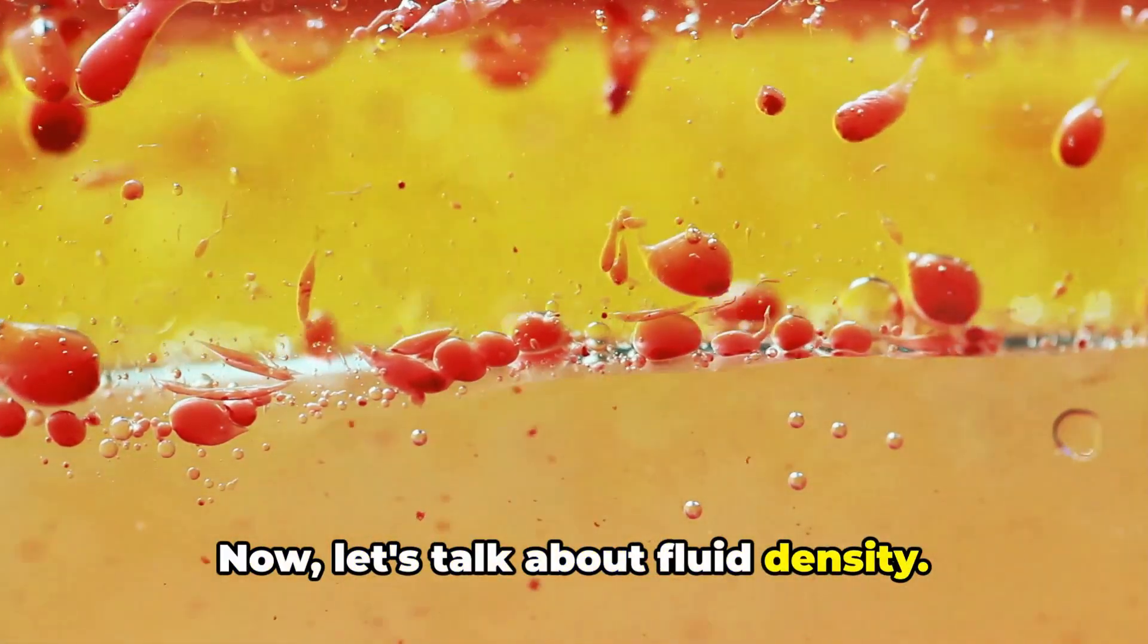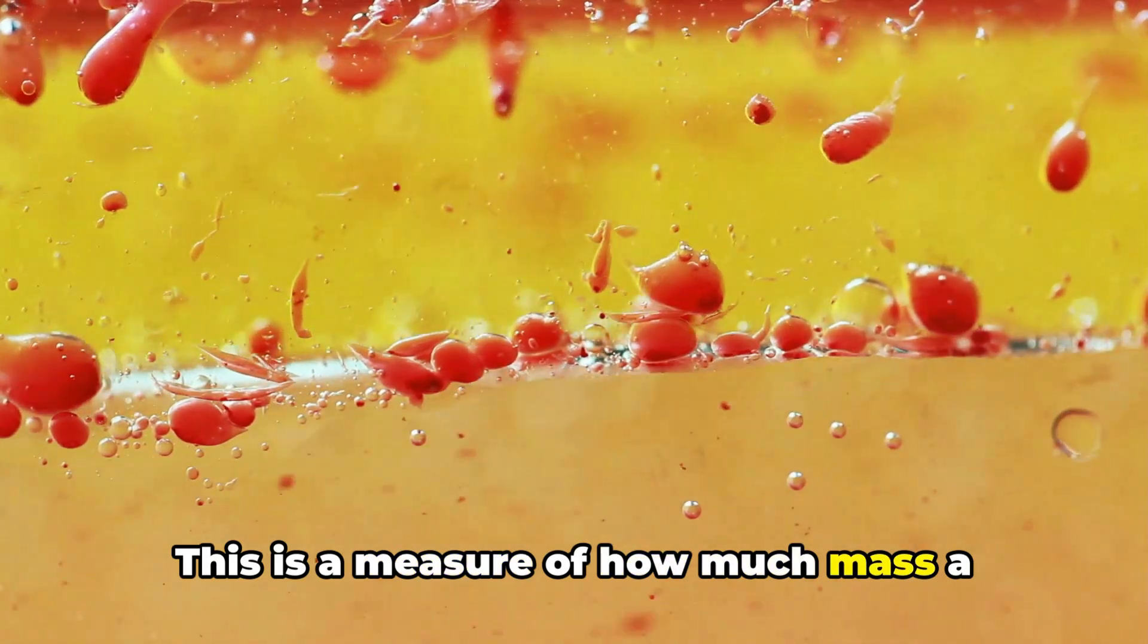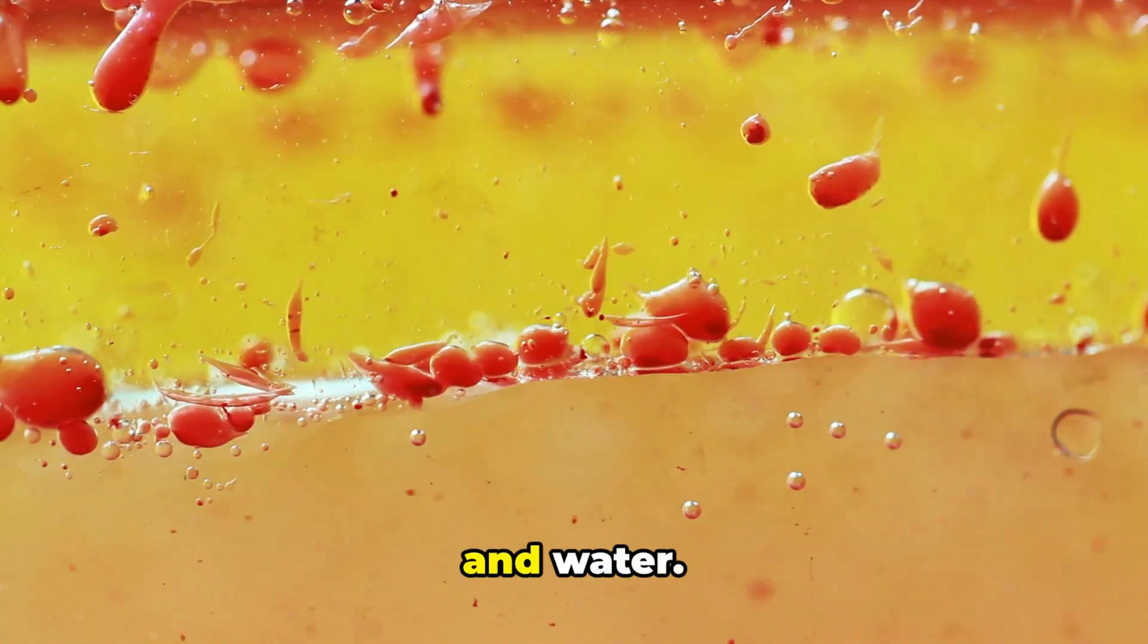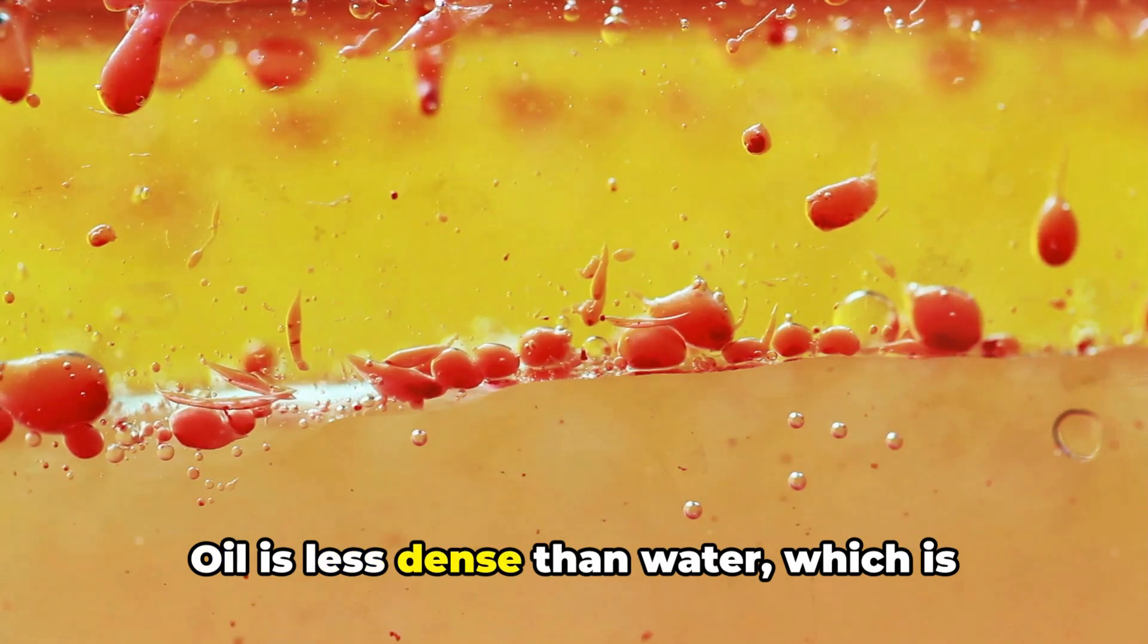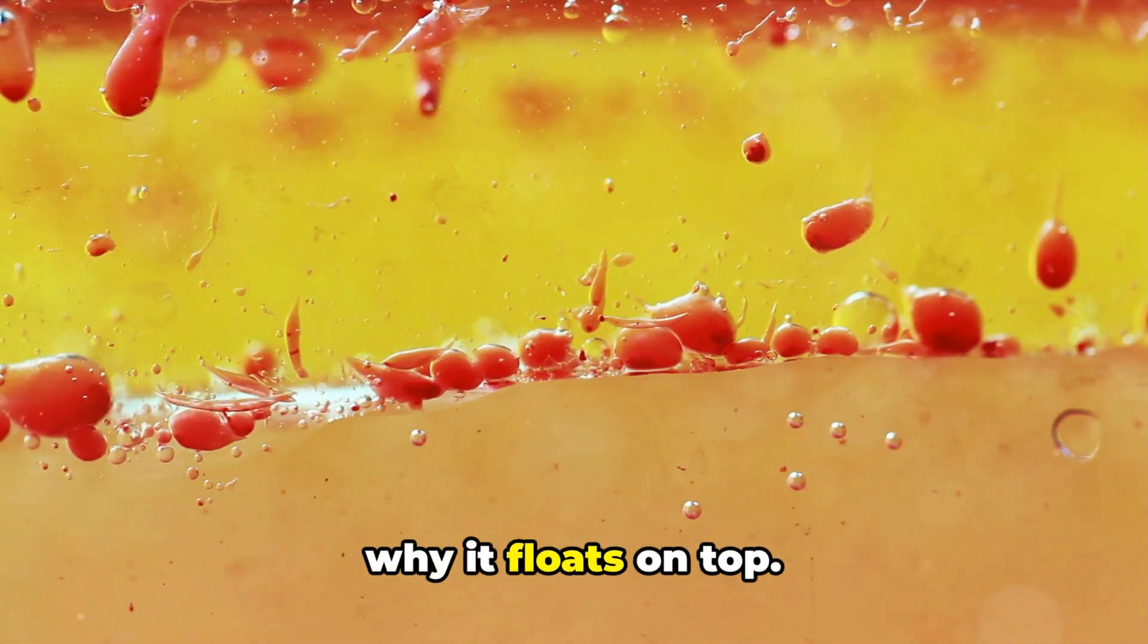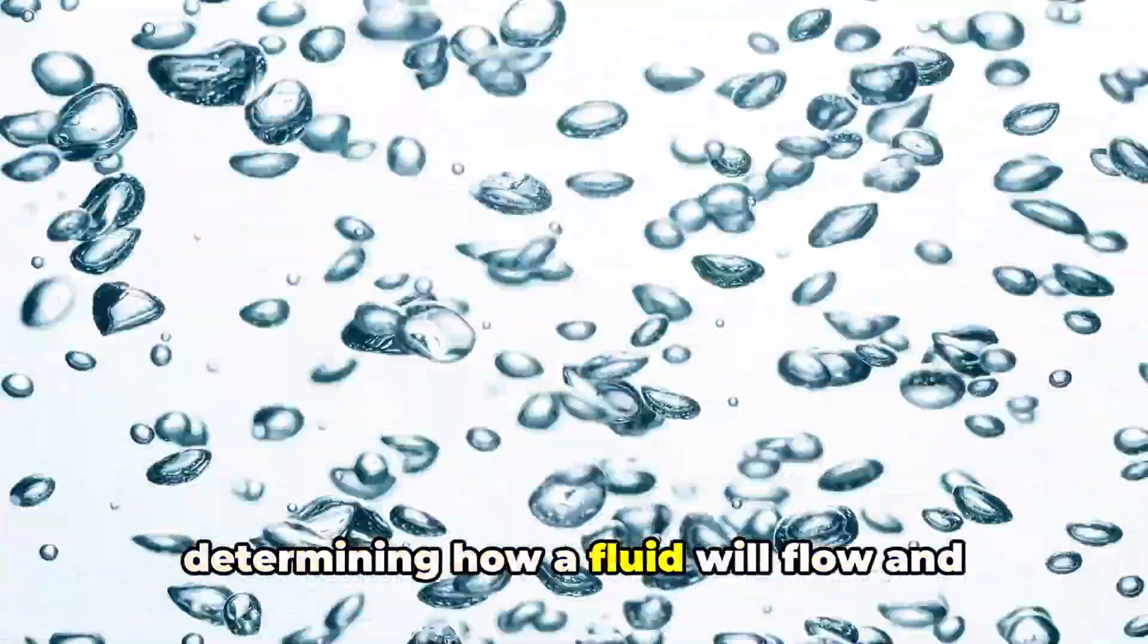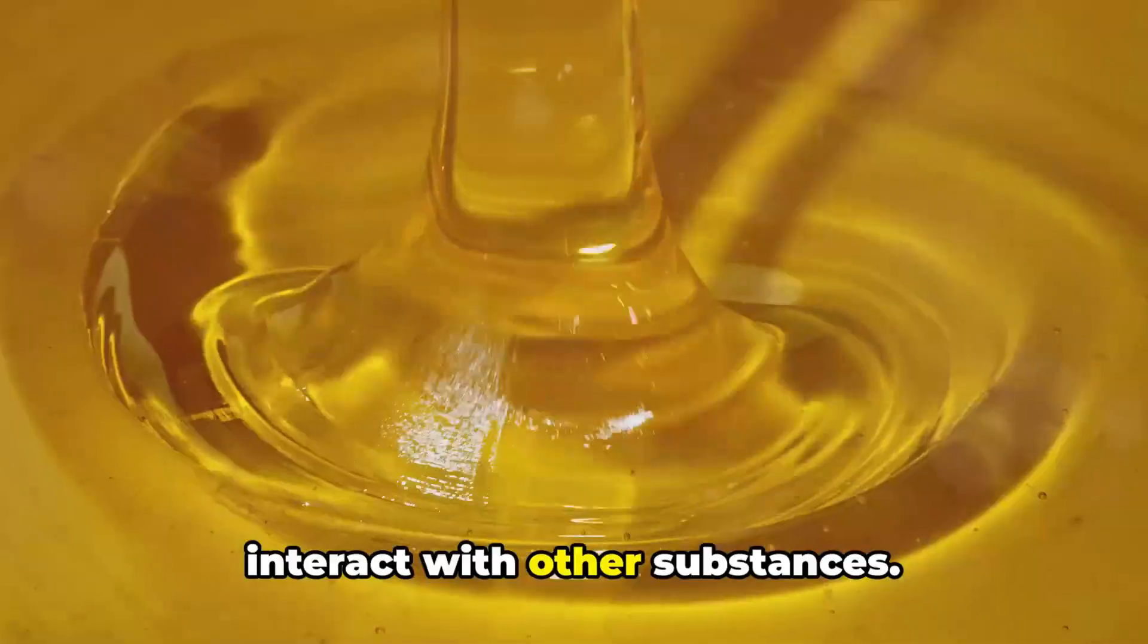Now, let's talk about fluid density. This is a measure of how much mass a fluid has in a given volume. Think about the difference between oil and water. Oil is less dense than water, which is why it floats on top. The fluid density plays a crucial role in determining how a fluid will flow and interact with other substances.